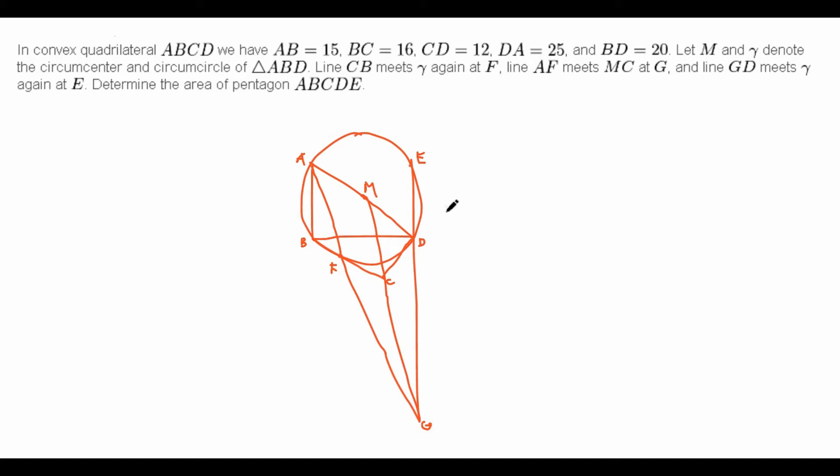Determine the area of pentagon ABCDE. So first, they give us a bunch of random side lengths, and then tell us to intersect these with the circle and create even more random sides to intersect with the circle. And then finally, tell us to find an area.